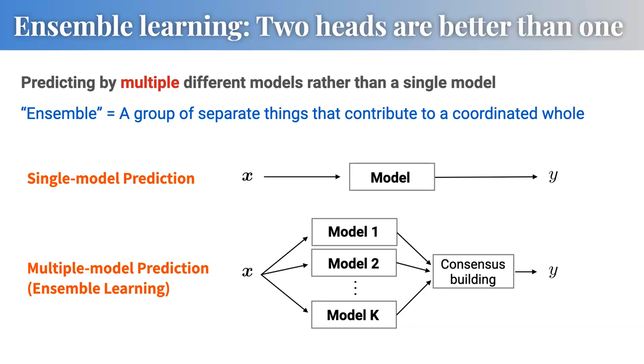The word 'ensemble' is probably from French, meaning simply 'set' in the original word — like a musical ensemble, where combining different parts produces something better overall.